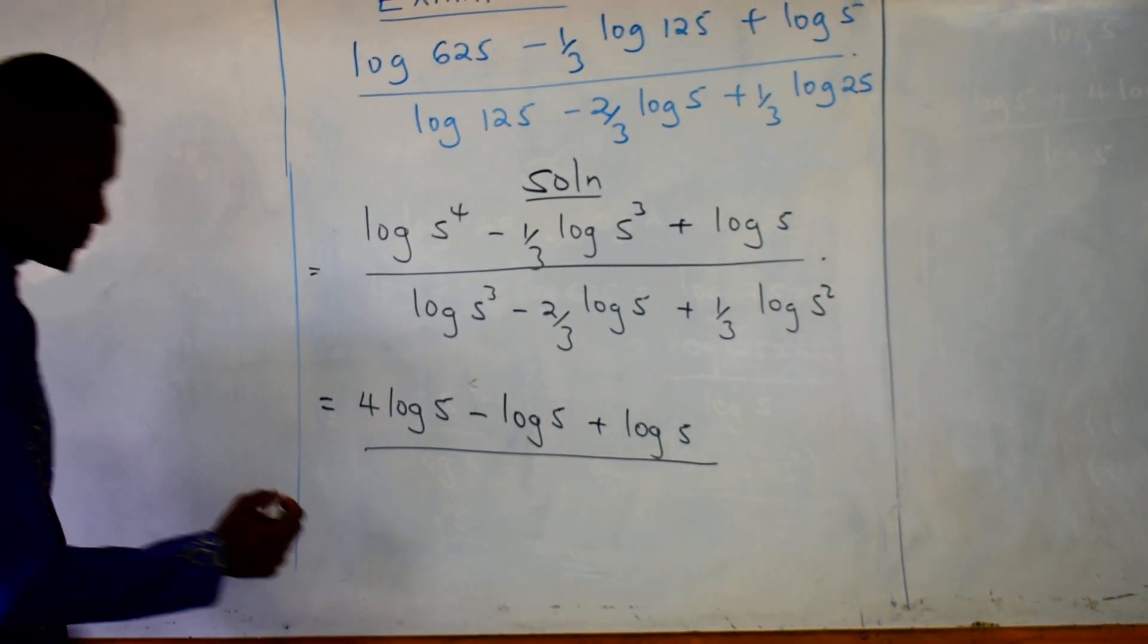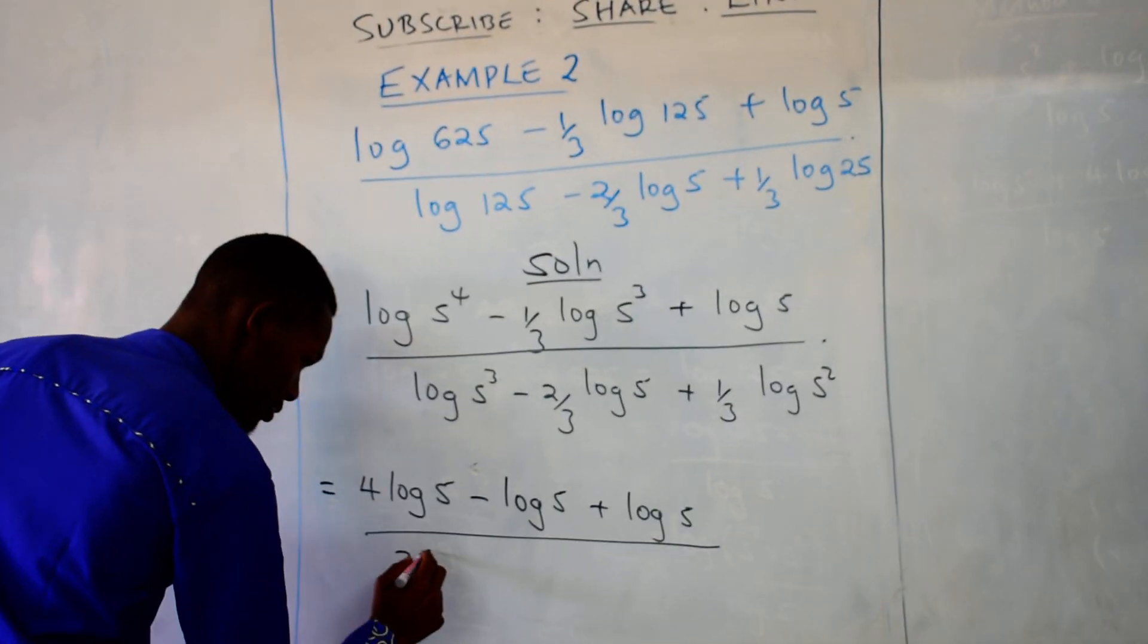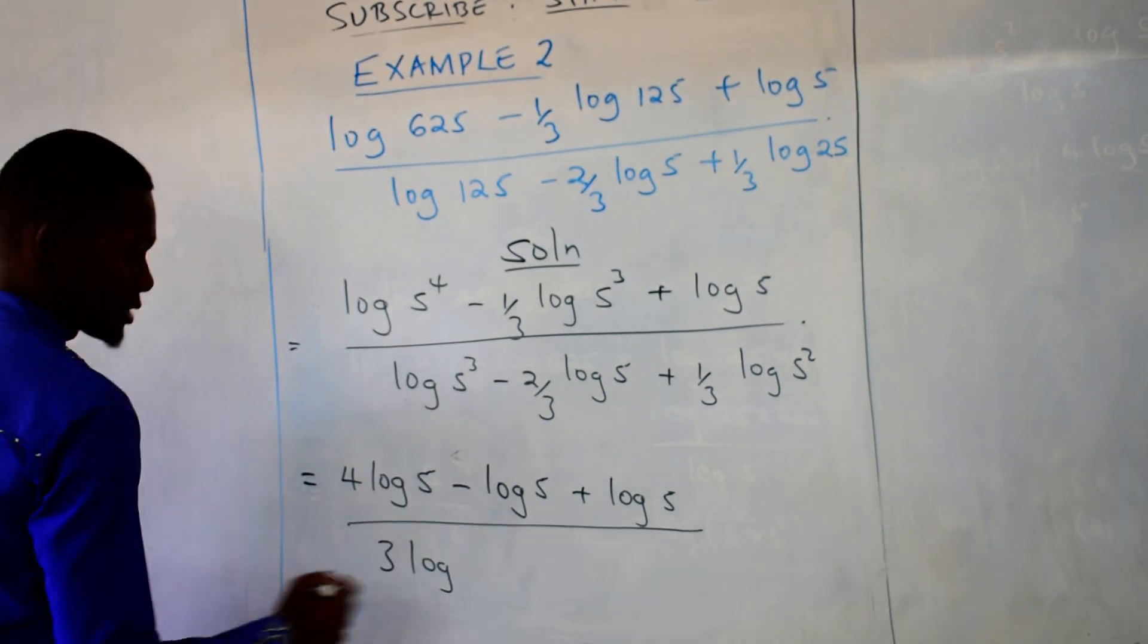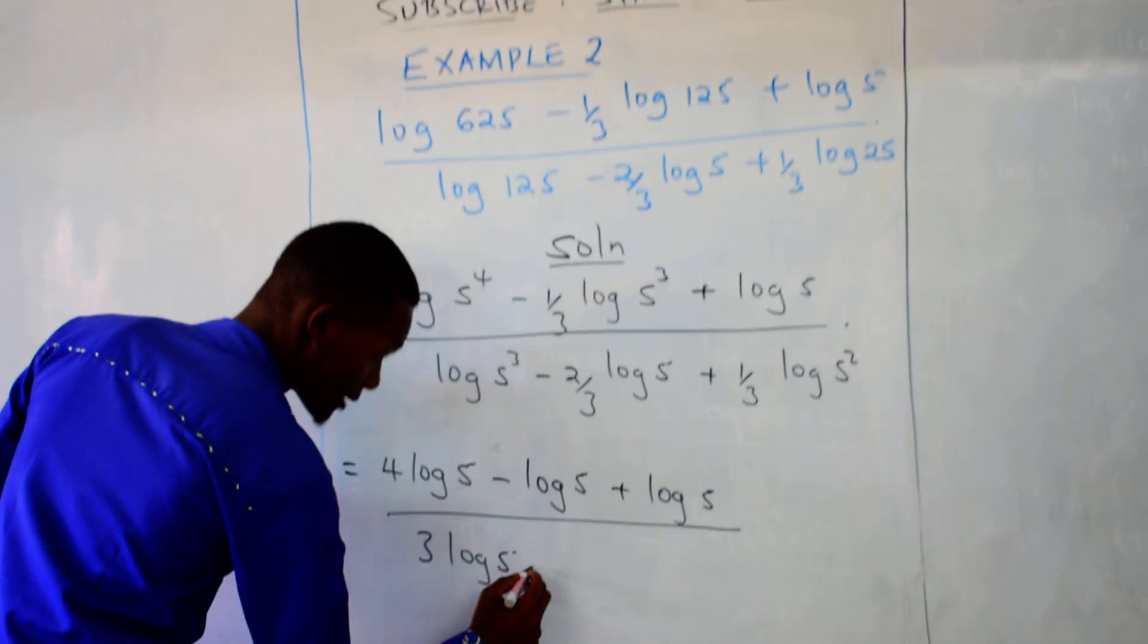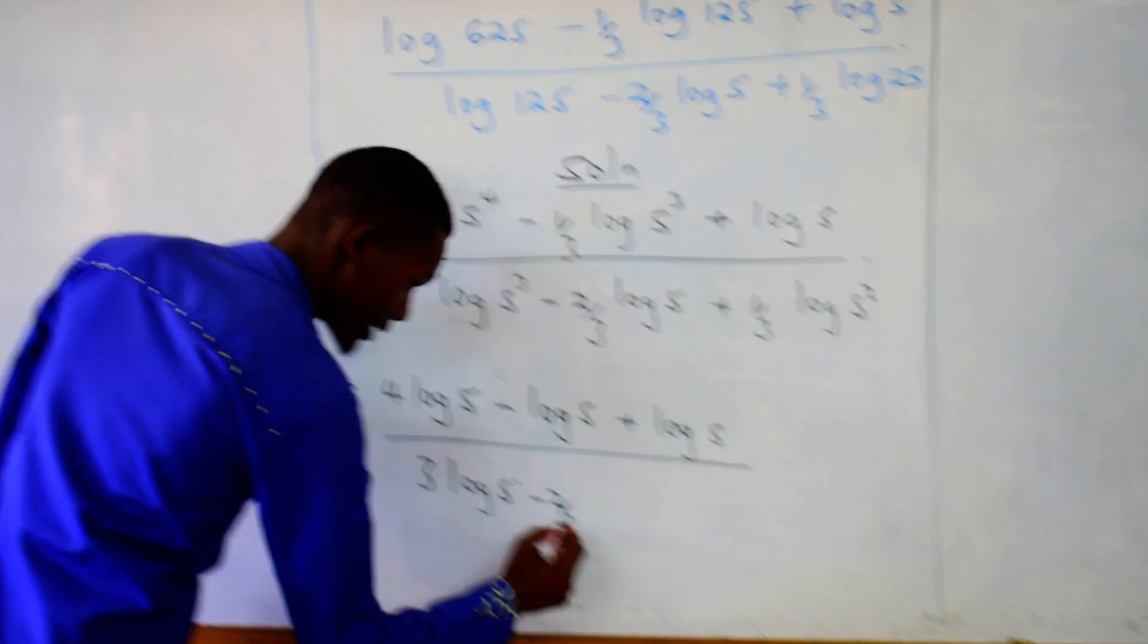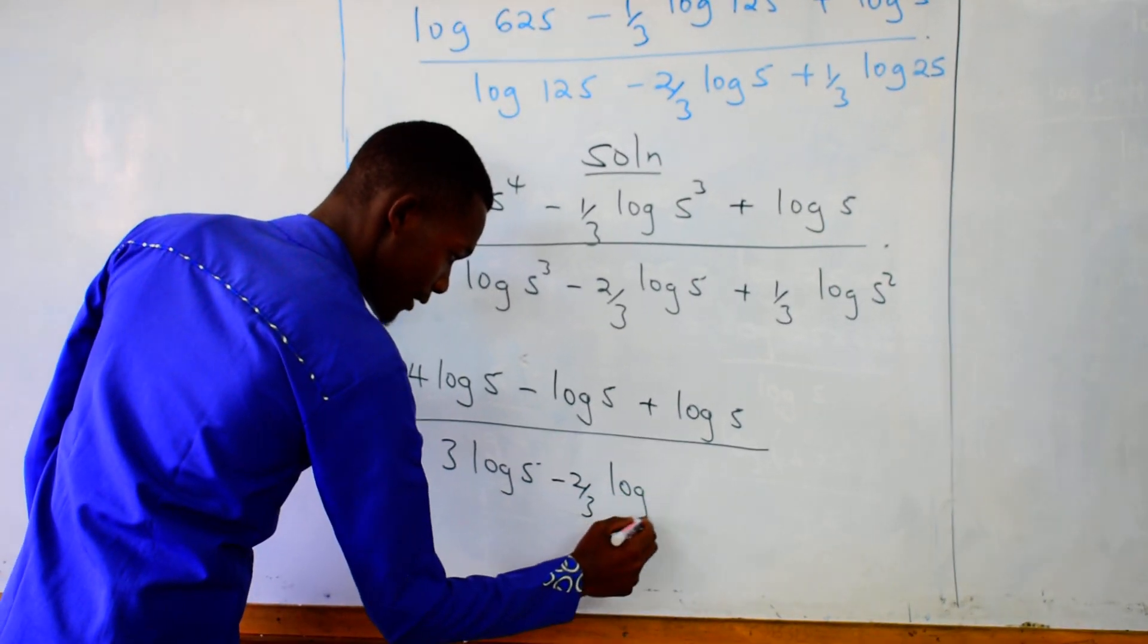That is the numerator. Then the denominator, drop the power. So 3 log of 5. So we drop 3. So this one remains the same way it is. So two over three log of 5.